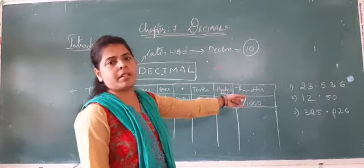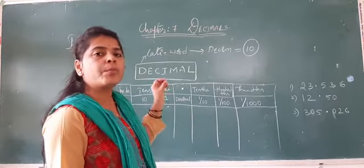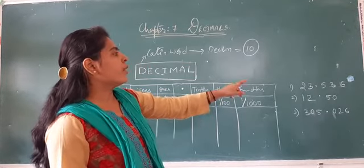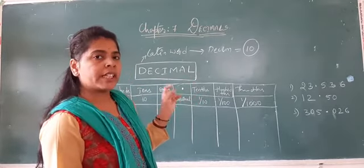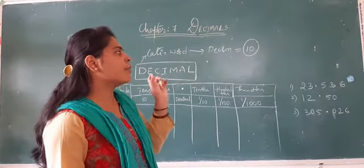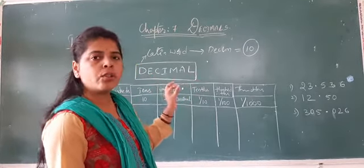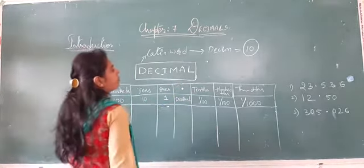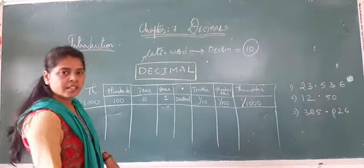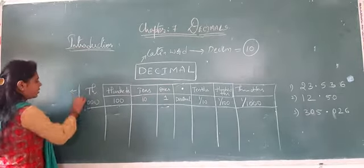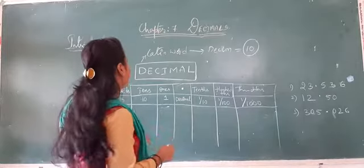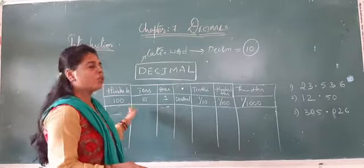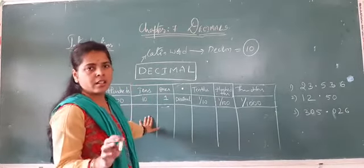Now when numbers are given with a decimal point, we need to know how to place those decimal numbers into the place value table. For example, I have taken the number 23.536. The decimal number should be read in a specific way. We will insert it into the table — the example is 23.536.